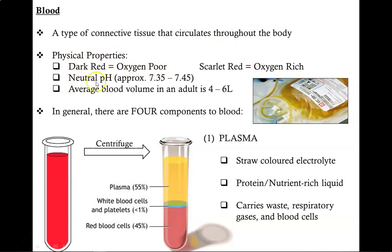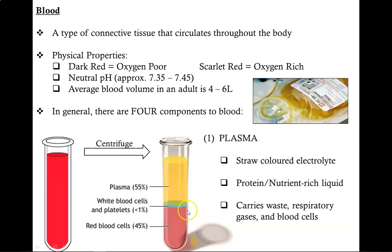Blood generally has a neutral pH that's slightly basic, and the average blood volume in an adult is between 4–6 liters. In general, there are four components to blood. We generally can't see these four components because they're mixed well with each other, but by spinning them in a centrifuge, we can separate them out based on their densities.